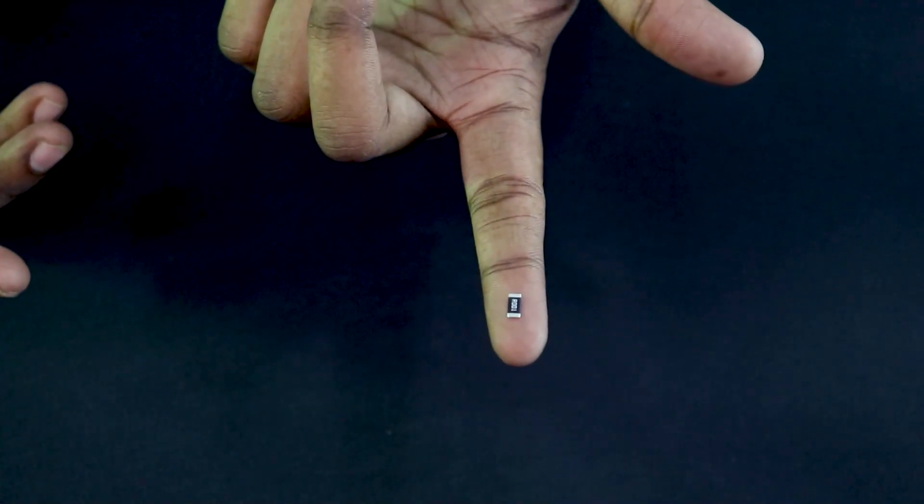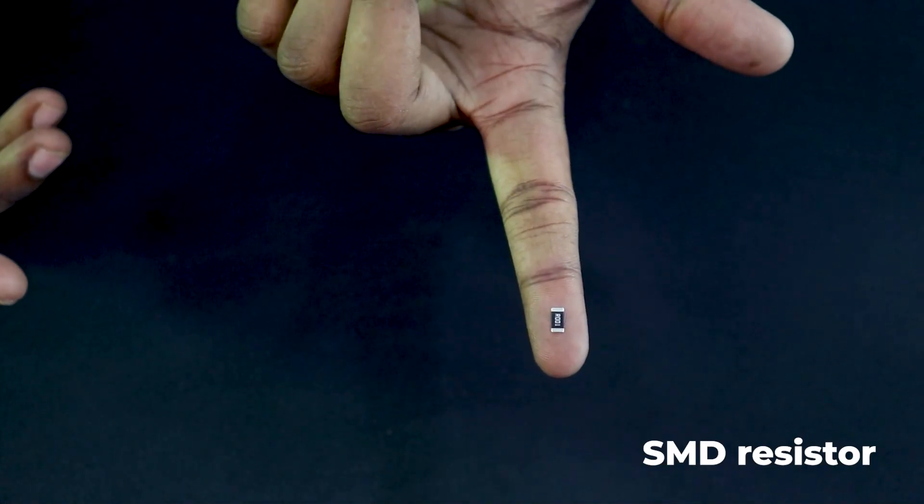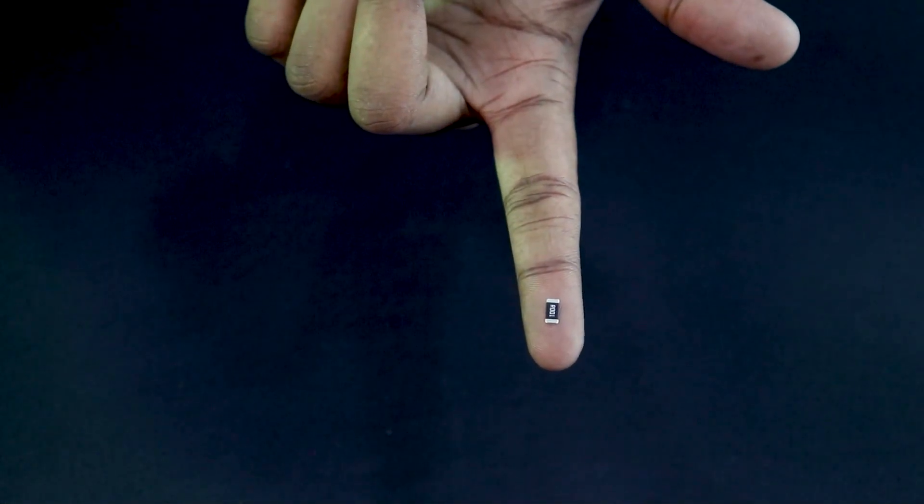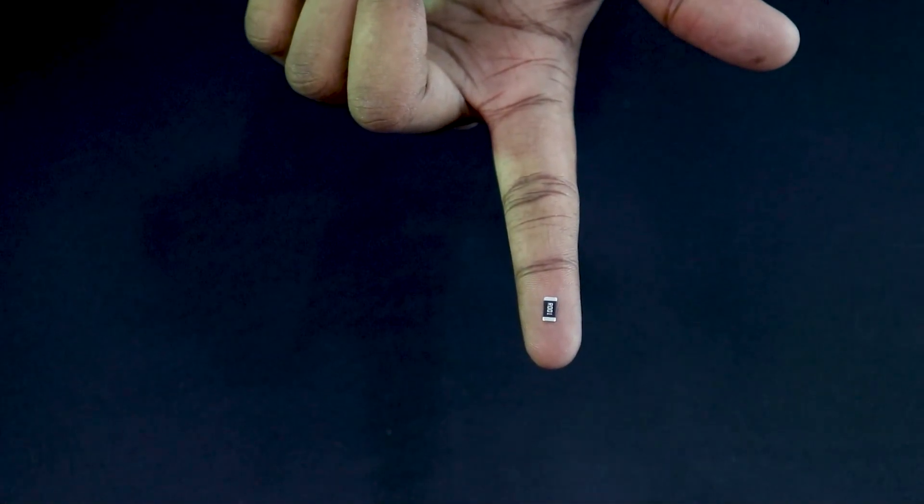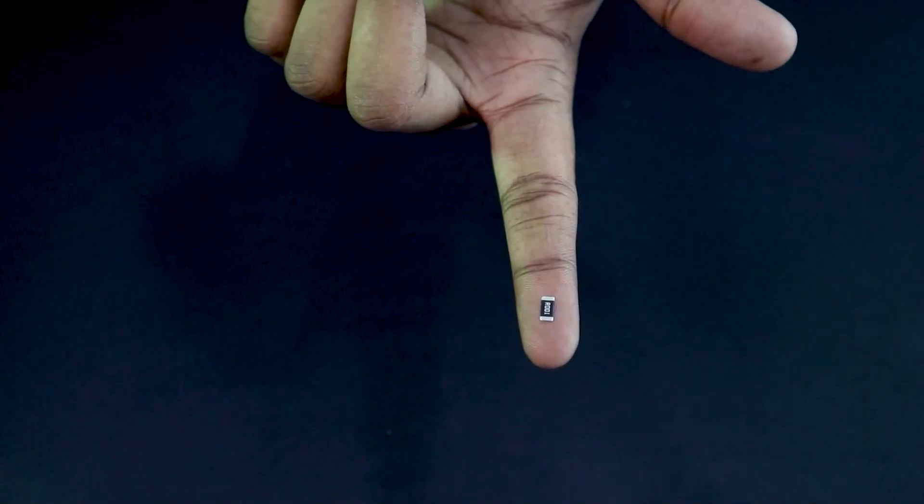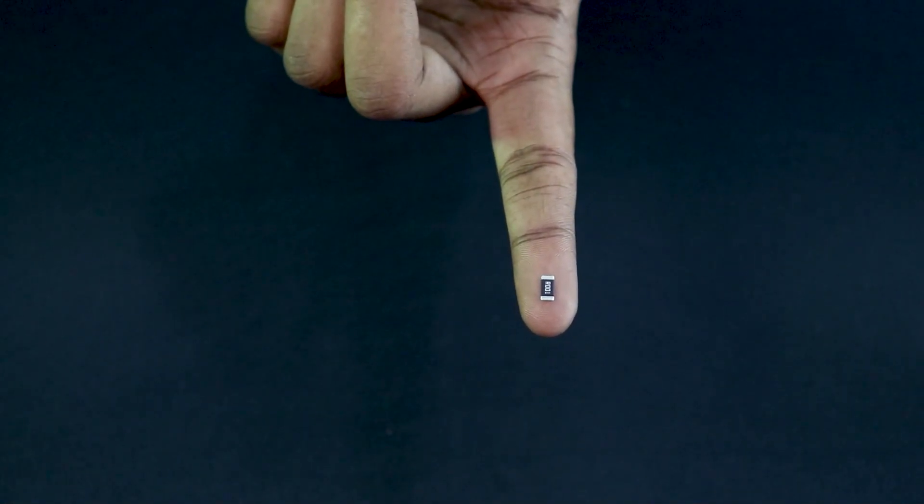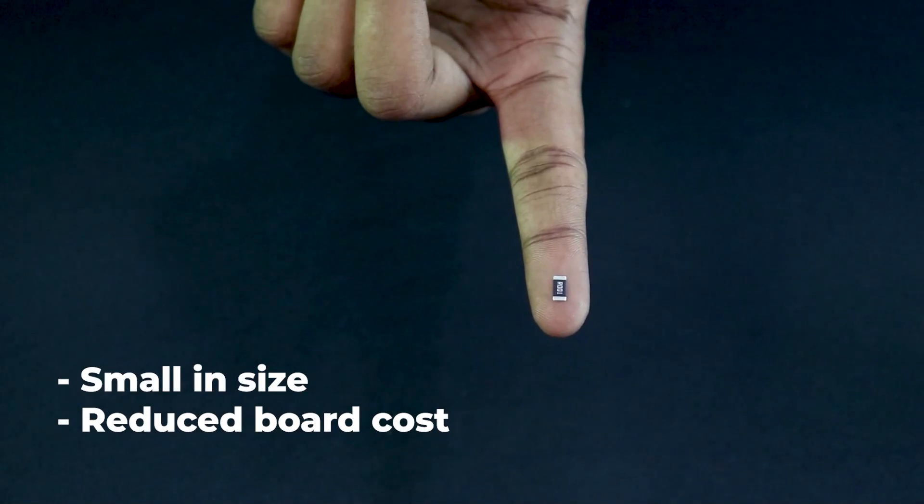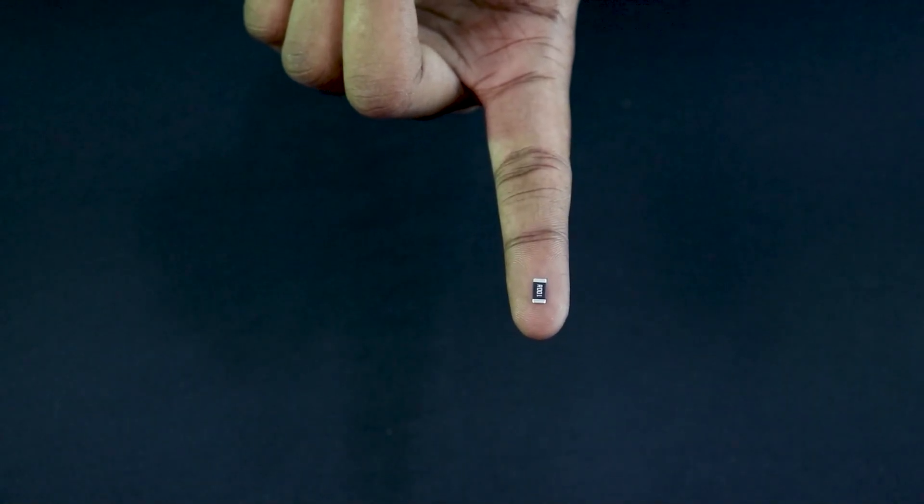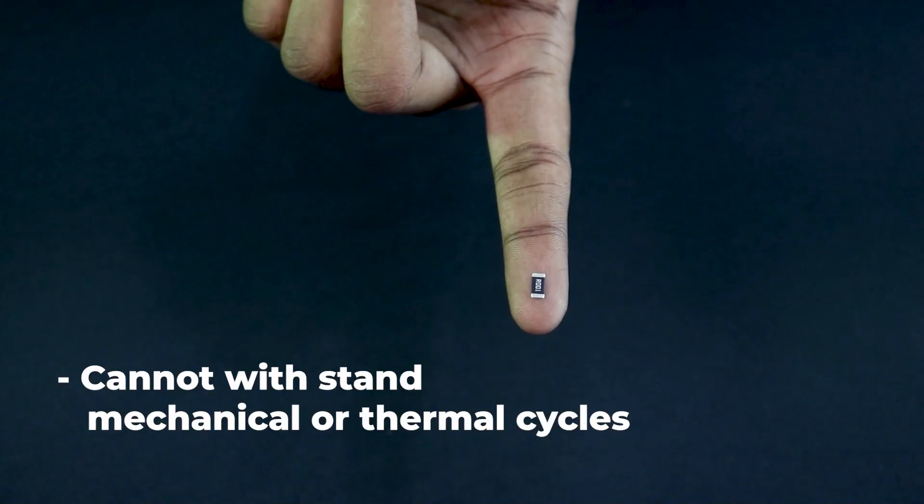So this is basically a SMD resistor. SMD resistors as you can see are smaller in size. They are made by placing end connection electrode bases onto an aluminum or ceramic substrate. So the very main advantage of surface mount resistors are they are small in size and they have reduced board costs. But the disadvantage of these resistors are they cannot withstand mechanical or thermal cycles like the other resistors.